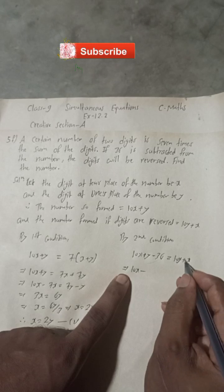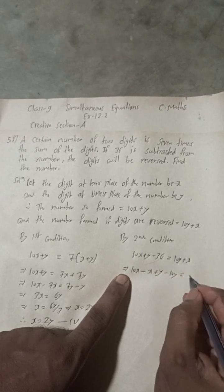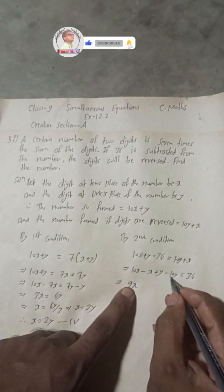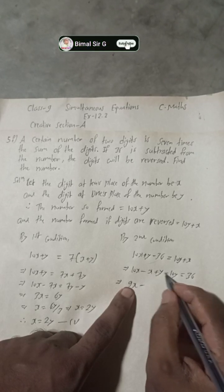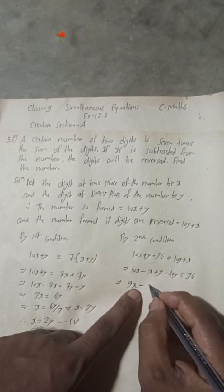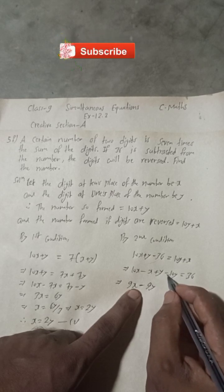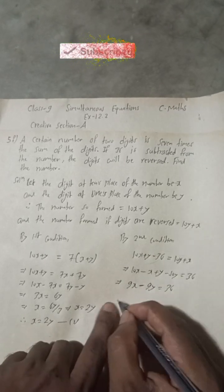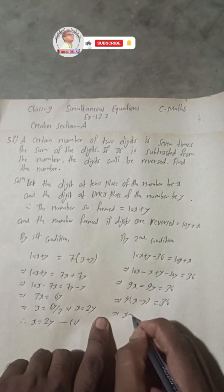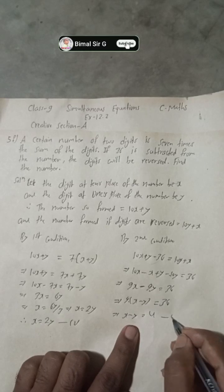Rearranging: 10x + y − 36 = 10y + x, so 10x − x + y − 10y = 36, giving 9x − 9y = 36. Taking 9 as common, x − y = 36/9 = 4. So x − y = 4 is our Equation 2.